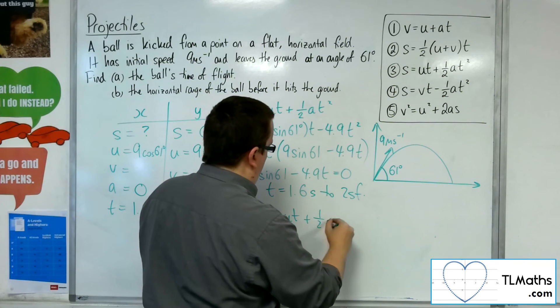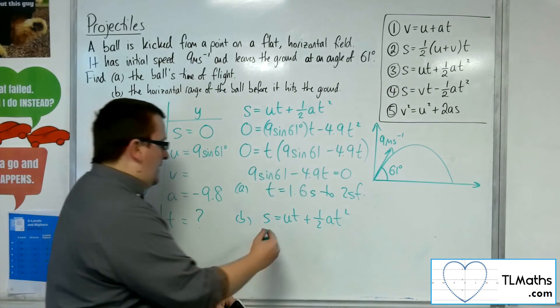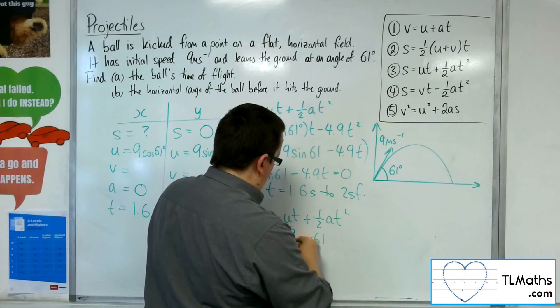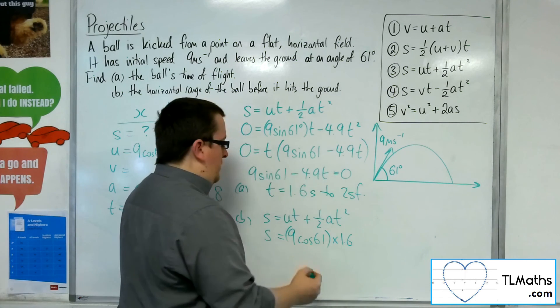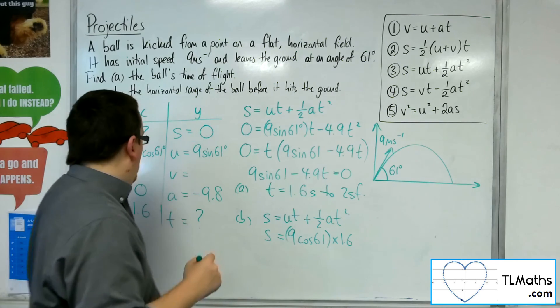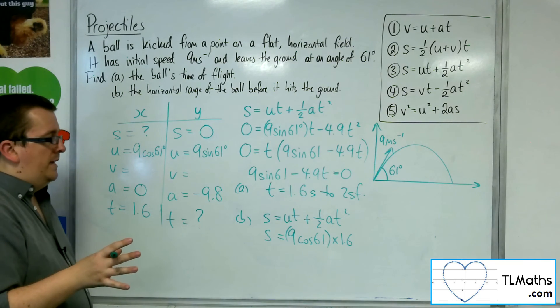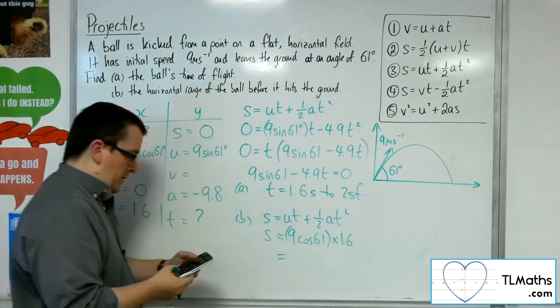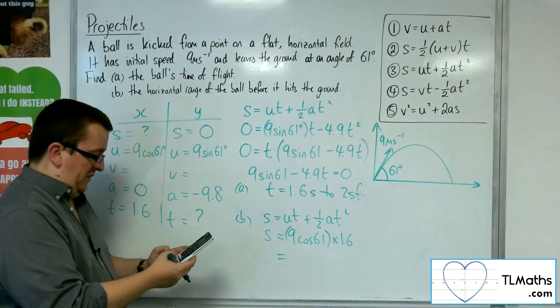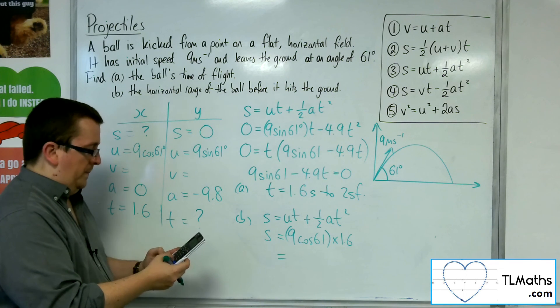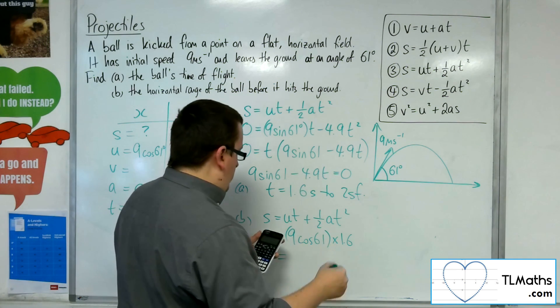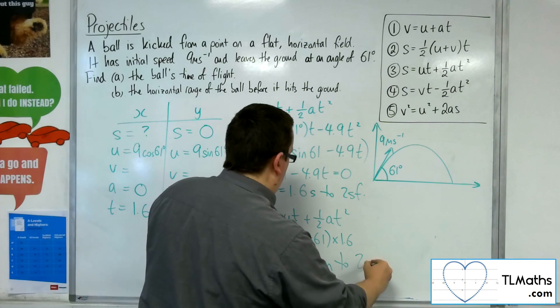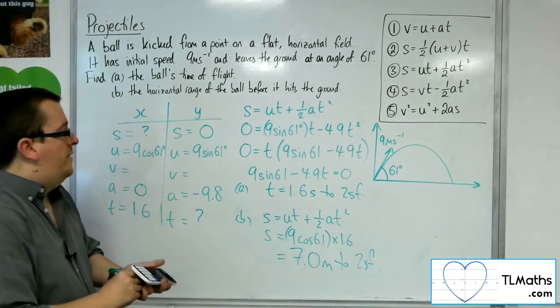So S equals UT plus 1 half AT squared. Now the S is what I want. Now the U is 9 cosine 61 times by the 1.6, so UT, plus 1 half A T squared. Well A is 0. And so it's just 9 cosine 61 times 1.6. So times what I've got in my calculator still by 9 times cosine 61. And that gets me 7.009, so 7.0 metres to two significant figures. And there is my answer.